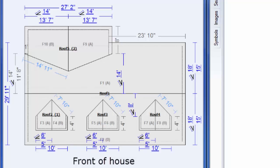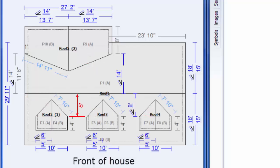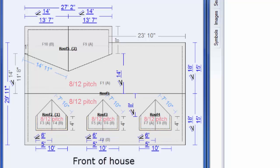For this exercise we will draw a gable roof that has three dormers in the front and an extension off the back. The dormers are set at eight feet down from the ridge and the back extension is set at 14 feet down from the ridge. The main roof overhang is 12 inches and the dormer overhang is six inches. The main roof pitch is eight and twelve and the back extension roof pitch is three and twelve.